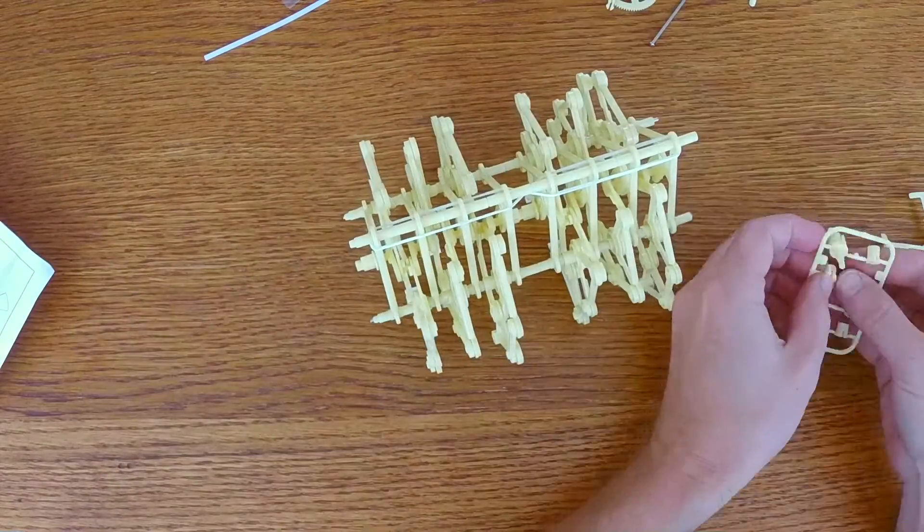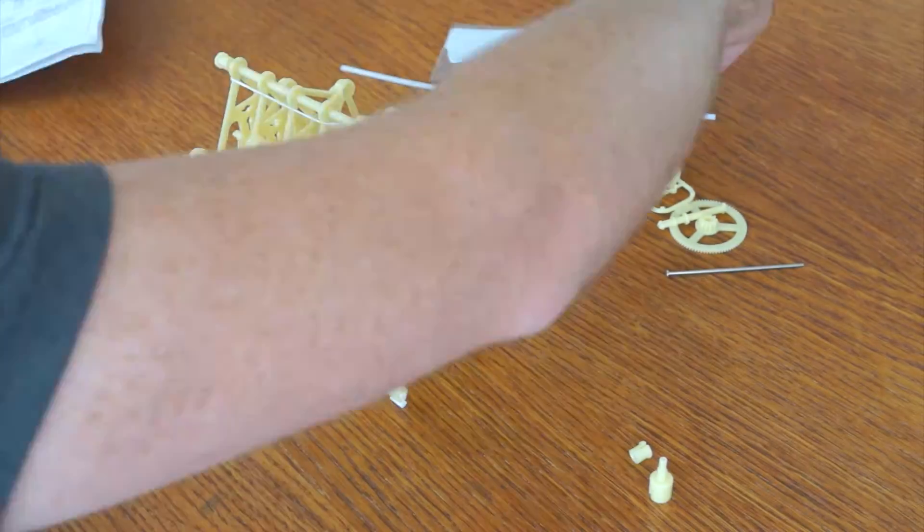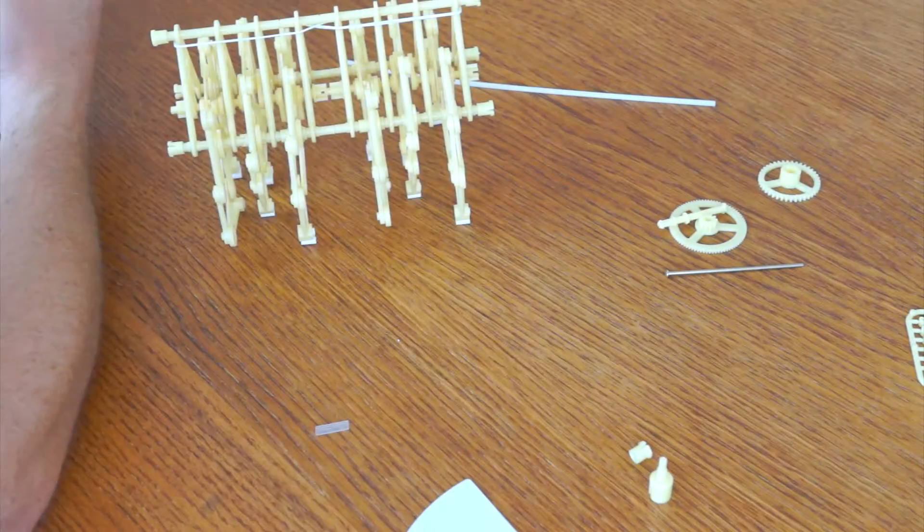So here I'm putting in the little steel rods to stiffen up those legs. The rubber band is really there just to help provide some tension so it all grips together.